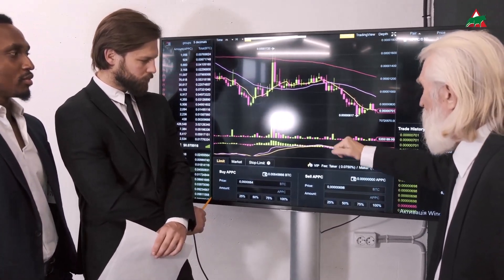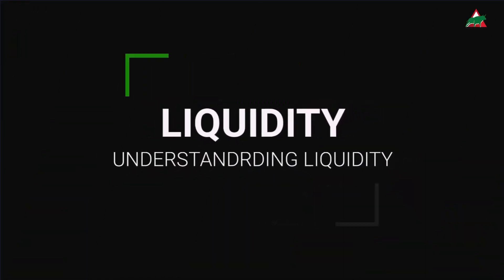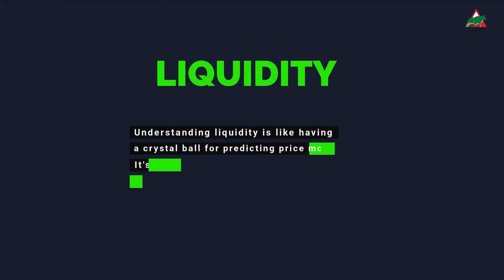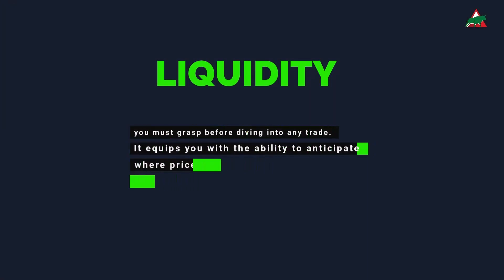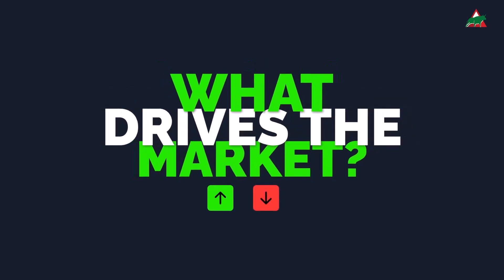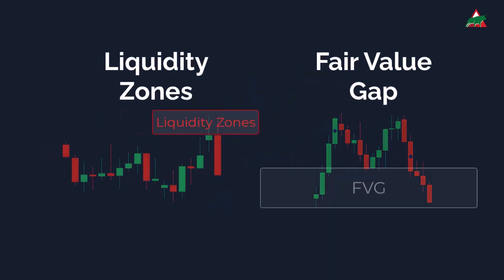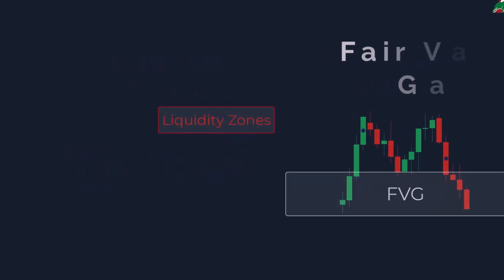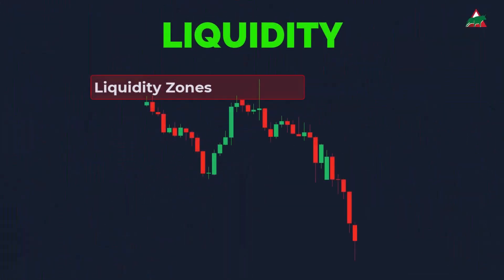Welcome back, traders. Let's kick things off by talking about liquidity. Understanding liquidity is like having a crystal ball for predicting price movements — it's a fundamental concept you must grasp before diving into any trade. It equips you with the ability to anticipate where prices might go, whether they'll retrace or make a big move up or down. So what drives the forex market's ups and downs? It all boils down to two key factors: liquidity zones and fair value gaps. First up, liquidity zones — think of liquidity as the lifeblood of the market. It's what the market constantly chases to fuel price momentum.